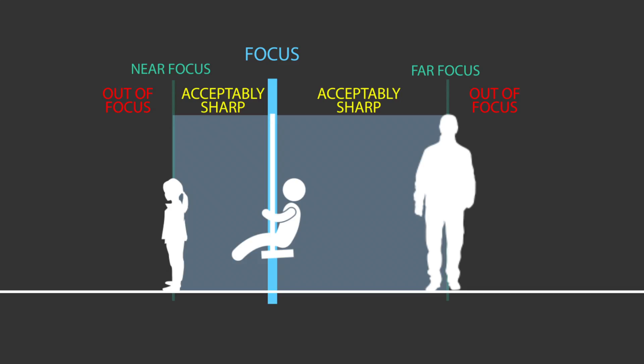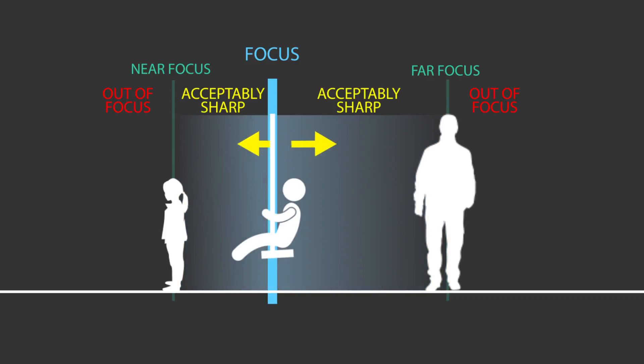Additionally, our graphics in previous lessons showed this acceptably sharp depth of field as an absolute range between the near focus and the far focus limits. But it isn't like, as you move through the field, everything is in perfect focus and then suddenly, when you cross a boundary, it's instantly out of focus. Instead, the better way to think of depth of field is as a gradient, moving gradually from what is in focus to what isn't in focus. Gradually, as you move away from the plane where objects aren't truly in focus, things will slowly become less acceptably sharp.